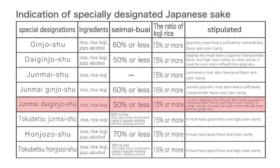Junmai-daiginjoshu should have a superior characteristic flavor and color clarity. The ingredients must be rice and rice koji. As with junmai-shu and junmai-ginjoshu, jozo alcohol must not be used. It must have a polishing ratio of 50% or less, and the ratio of koji rice must be 15% or more. It must be even more refined than junmai-ginjoshu.